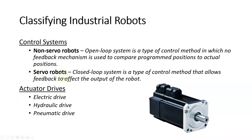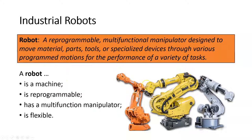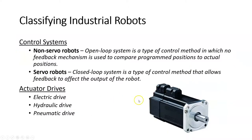Servo robots, like the ones used in an industrial environment, use a servo motor to control their position. A servo motor is a special type of motor with a device attached to the spindle or axle. Every time the axle rotates — no matter how many times — the servo keeps track of how many rotations have been completed, so the robot always knows where it is.